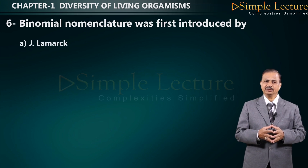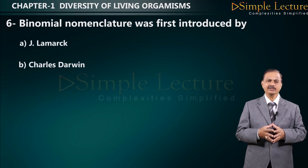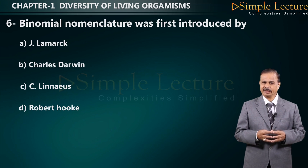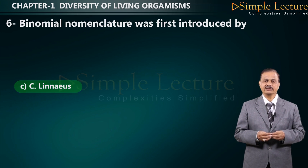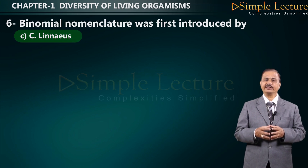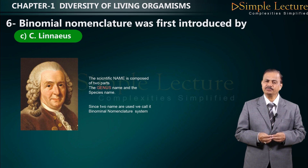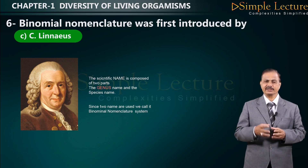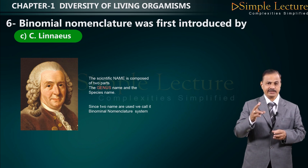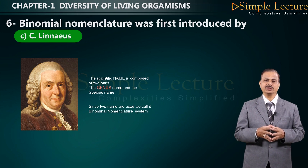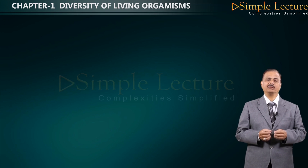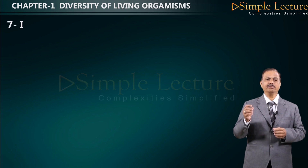Question number six: binomial nomenclature was first introduced by — options are A: Lamarck, B: Charles Darwin, C: Carolus Linnaeus, D: Robert Hooke. The correct answer is C: Carolus Linnaeus. The scientific name is composed of two parts — the genus name and the species name — hence we call it binomial nomenclature.